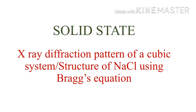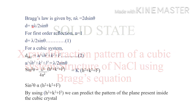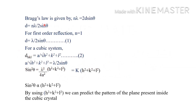In the last videos we have discussed X-ray diffraction using single crystal and powder methods. Now we are going to discuss the structure of sodium chloride using Bragg's equation. We already know Bragg's law: n lambda = 2d sin theta, and d = n lambda / (2 sin theta). For a first order reflection, n = 1, therefore d = lambda / (2 sin theta).